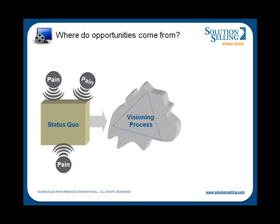To address pains, organizations must first figure out the best way to solve them. There may be many different ways to address each pain. To select the best approach, the organization must develop a clear vision of a potential solution — one that provides the highest value to the organization. This visioning process can consume quite a bit of time and resources before a clear vision emerges.